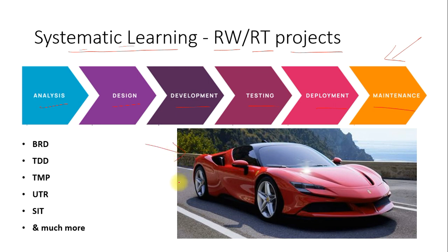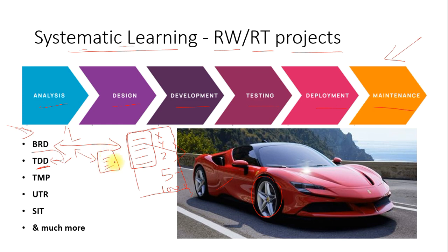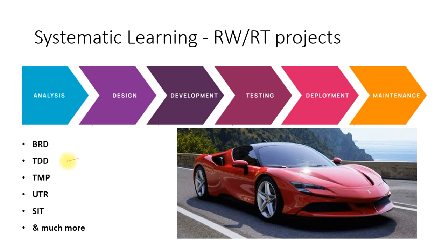For example, let's say your business wants to build a fancy car. A set of people would prepare documentation specifying: I need a luxury feature set, this color, bigger tires, capacity for five people, top speed of a hundred. In plain English, the business writes this down — and that is called a BRD, a Business Requirement Document. This is where all real-time projects start. As a technical team, we take this BRD and convert it into a Technical Design Document.